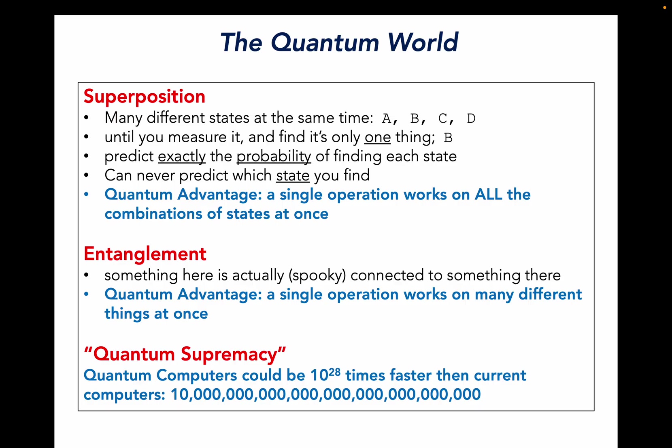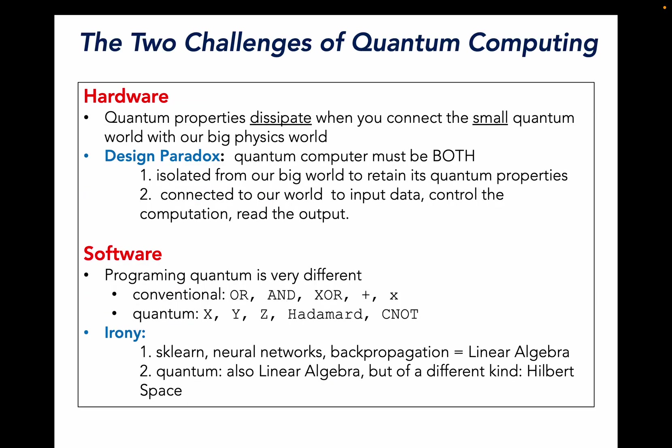What's been called quantum supremacy means that in certain computations, a quantum computer could be 10 to the 28th times faster than current computers. But the challenge of quantum computing is first of all the hardware. Quantum properties dissipate when you connect this small quantum world with our big physics world. So we have this design paradox. Quantum computing must be both isolated from our big world to retain its quantum properties, but equally connected to our world so we can input data, control the computation, and read the output.